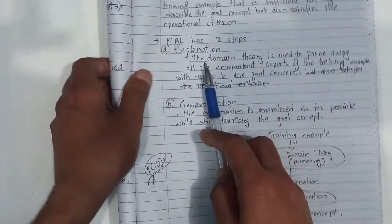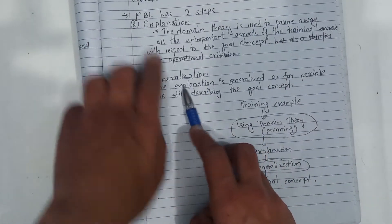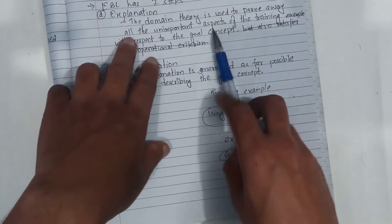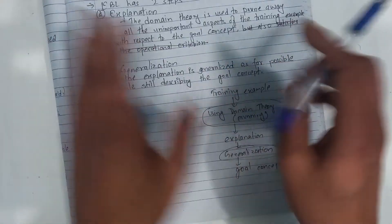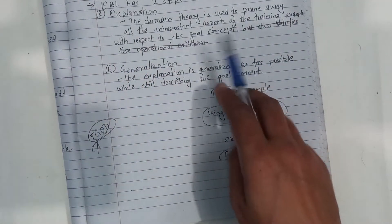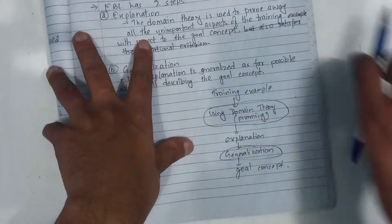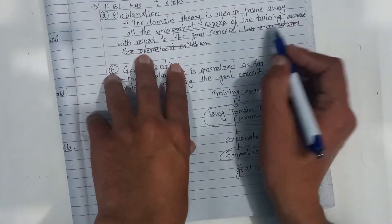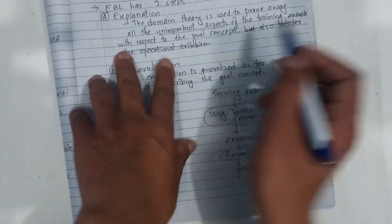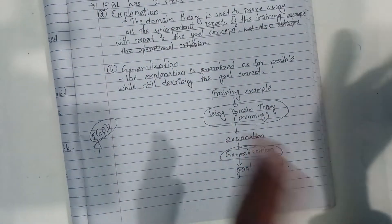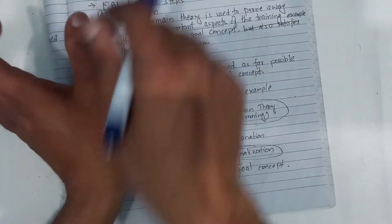First step is explanation and second step is generalization. Explanation, what is it? Domain theory is used to prune all the unimportant aspect of the training example with respect to the goal concept. Training example unimportant data is pruned.